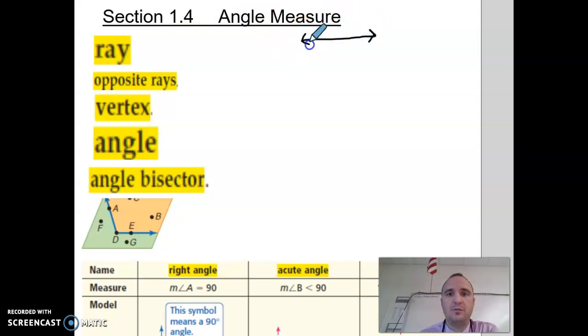You have a line and it's got two arrows with two dots, A and B. Now when you go to write that, it's A, B with a line over it.